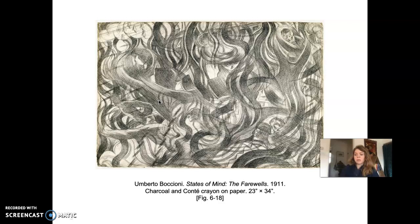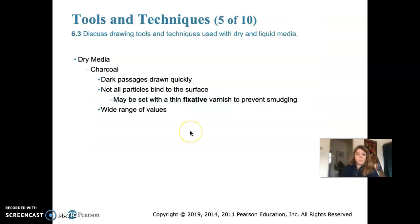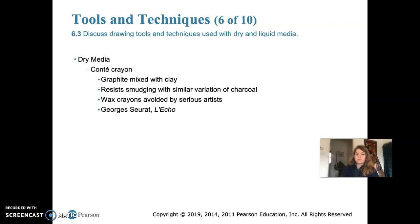Conté crayon is made from graphite that is mixed with clay and then pressed into sticks. It can produce varied lines or broad strokes that resist smudging, so it doesn't smudge as badly as charcoal. Georges Seurat used conté crayon to build up the illusion of three-dimensional form and value gradations — also called chiaroscuro — in his drawing L'Écho.